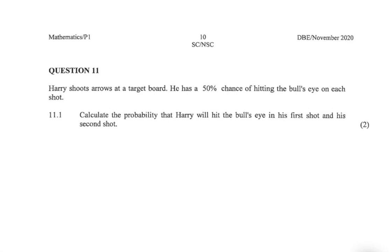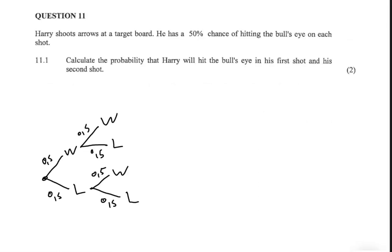When we want the probability of a sequence of events, it's always a good idea to use a tree diagram. So let's go ahead and construct one. On a tree diagram, when we go along the branches, we multiply. And then when we go down the branches, we add.